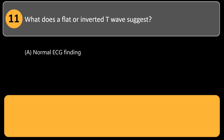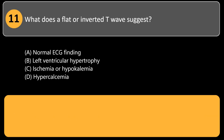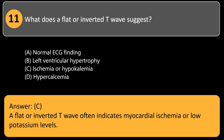What does a flat or inverted T-wave suggest? A. Normal ECG finding. B. Left ventricular hypertrophy. C. Ischemia or hypokalemia. D. Hypercalcemia. Answer: C. A flat or inverted T-wave often indicates myocardial ischemia or low potassium levels.